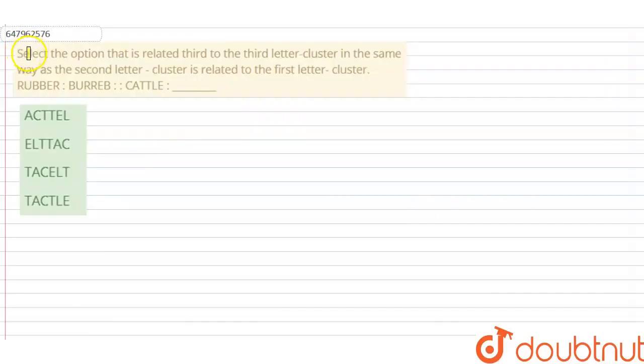Hello everyone, let's solve this question. Select the option that is related to the third letter cluster in the same way as the second letter cluster is related to the first letter cluster. Rubber is to B-U-R-R-E-B, Kettle is to dash. And options given are A, B, C and D.